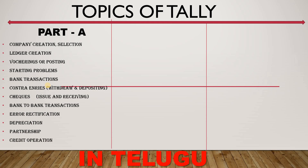Then we will do credit operations. When we do credit operations, we will handle some company transactions and go through the whole list. The credit-related entries are coming up, and then we will start inventory for the company.